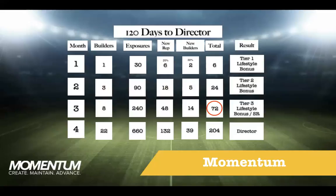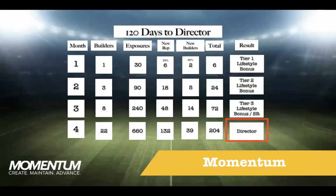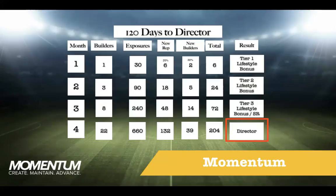Then in month number four, you've got a total of 22 builders on your team. 22 times 30 is 660 exposures. You've got 132 new reps and members, 39 builders, 204 on your team — you are now a director. The average director earns $3,000 to $5,000 per month with WorldVentures, and you did that within four months. The numbers don't lie: if you do the numbers, the numbers will be your friend. Follow this system — it is so powerful for creating momentum on your team.